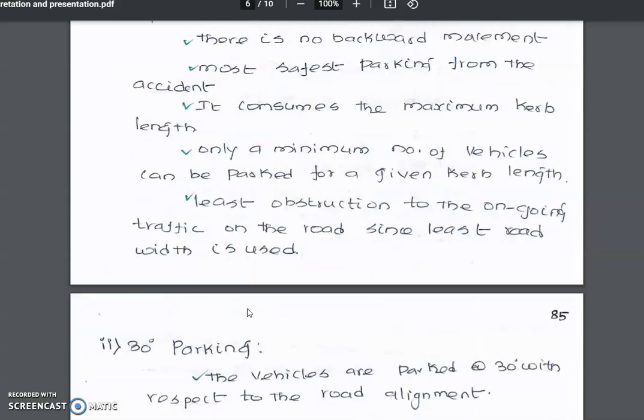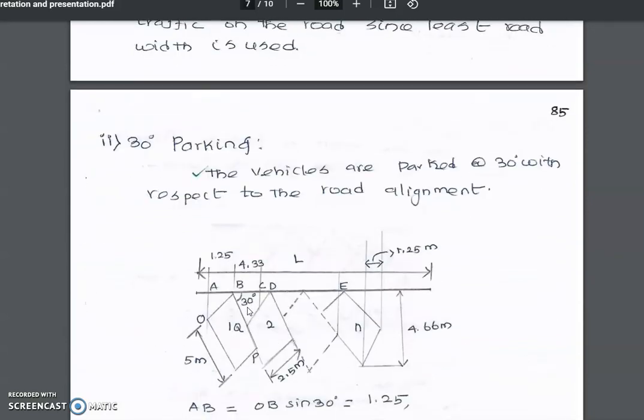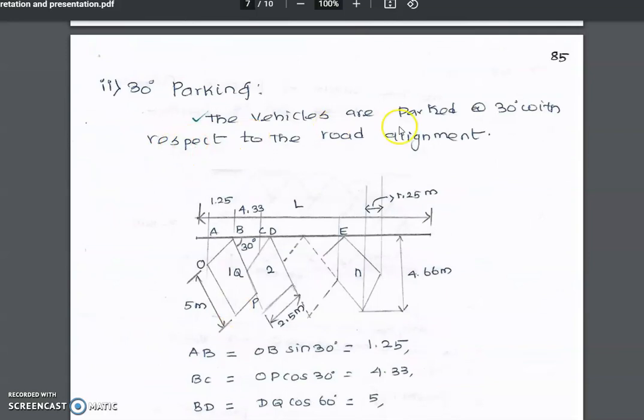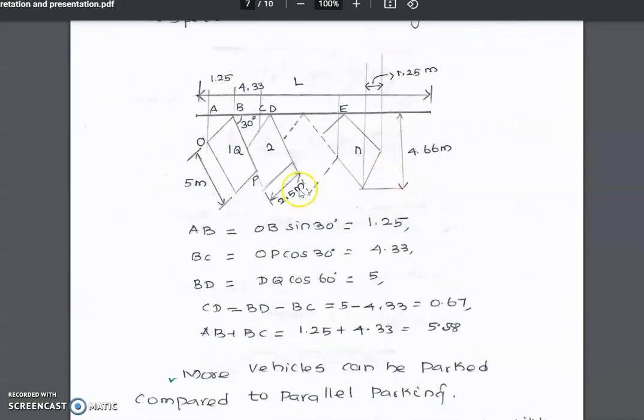Second: 30-degree parking. The vehicles are parked at 30 degrees with respect to the road alignment. Multiple vehicles can be accommodated along the road at this angle.